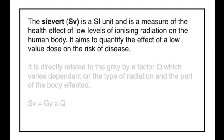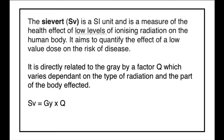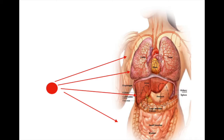Extending that further and concentrating on the effects on the human body, the Sievert is a unit supporting the measure of health effects of low levels of ionising radiation on the human body. It is the effective dose, helping to quantify the risk of damage and consequent disease. It is directly proportional to the Grey measurement by a factor Q, which varies depending upon the type of radiation and the part of the body.